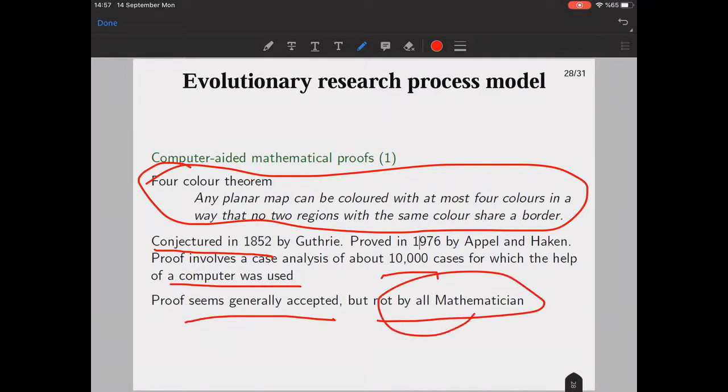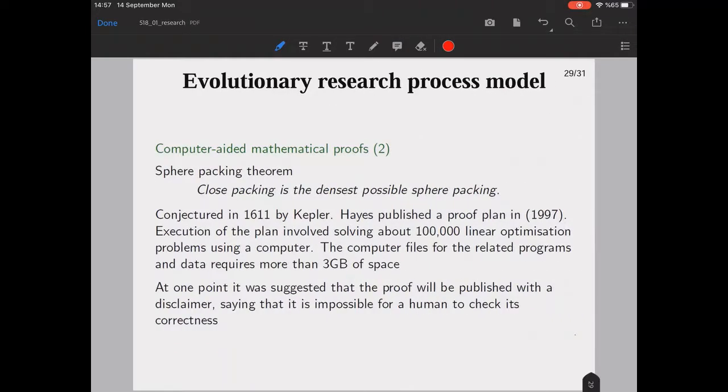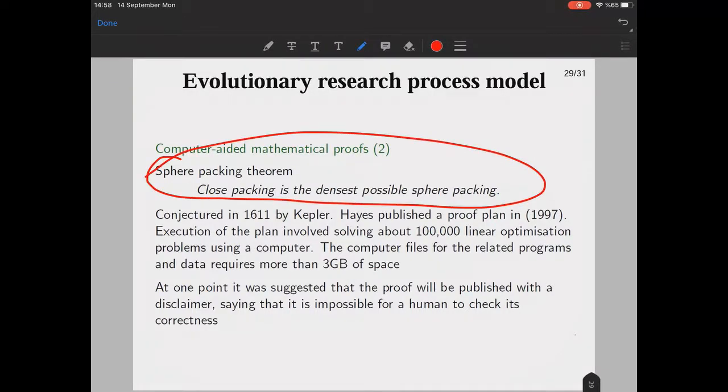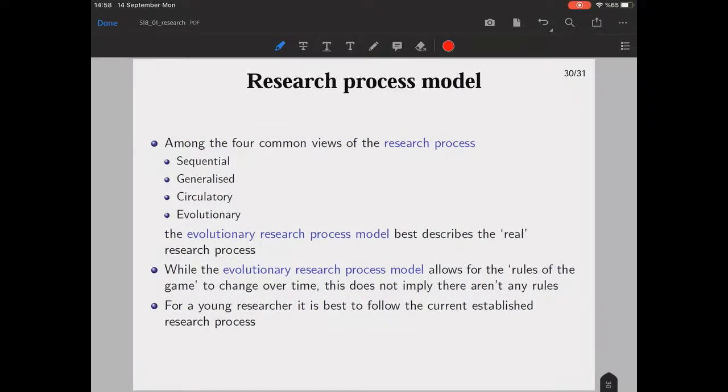Another problem is the sphere packing problem, which comes up with the conjecture that close packing is the densest possible sphere packing. It was conjectured by Kepler in 1611, and Hales published a proof plan in 1997. Execution of the plan involves solving 100,000 linear optimization problems using a computer. It took lots of space at that time. At one point it was suggested that the proof will be published with a disclaimer saying that it is impossible for a human to check its correctness.